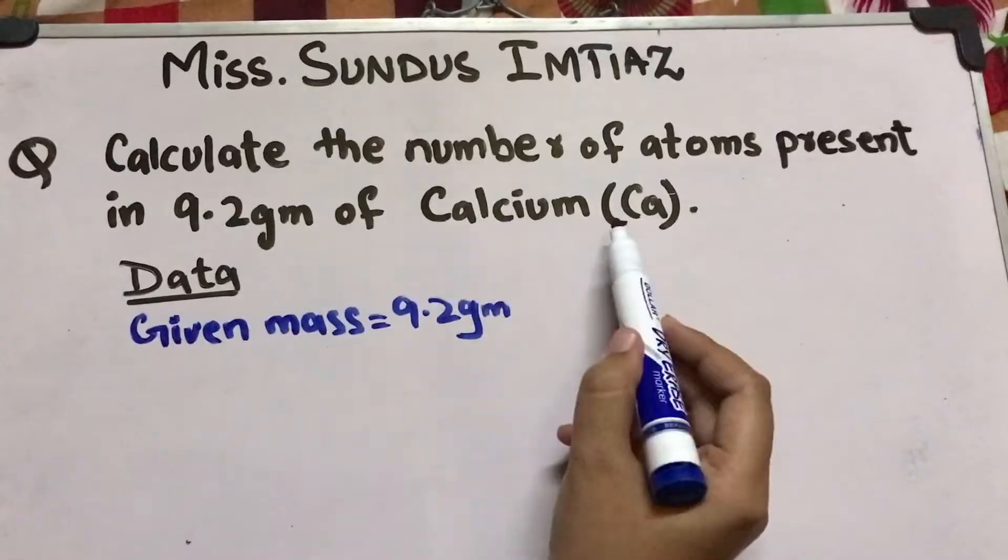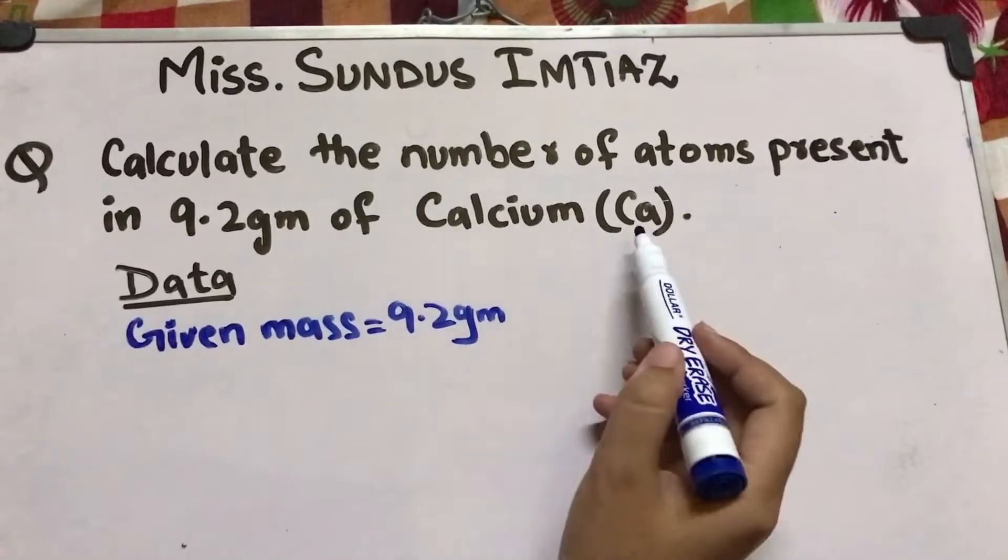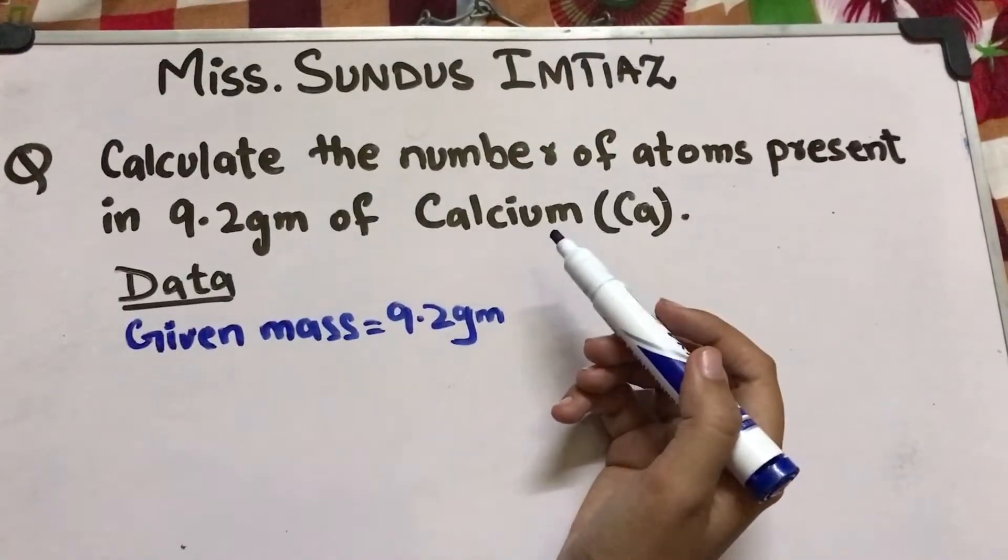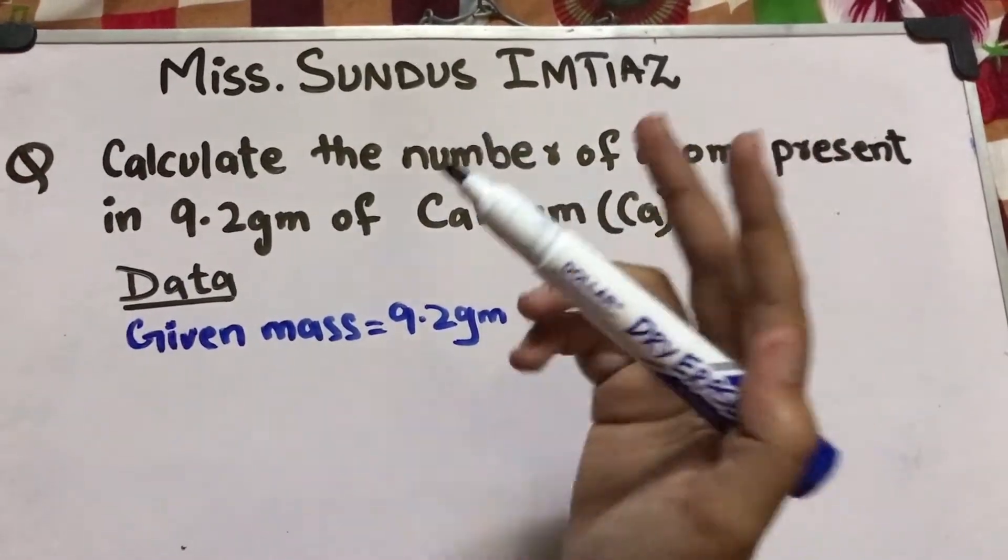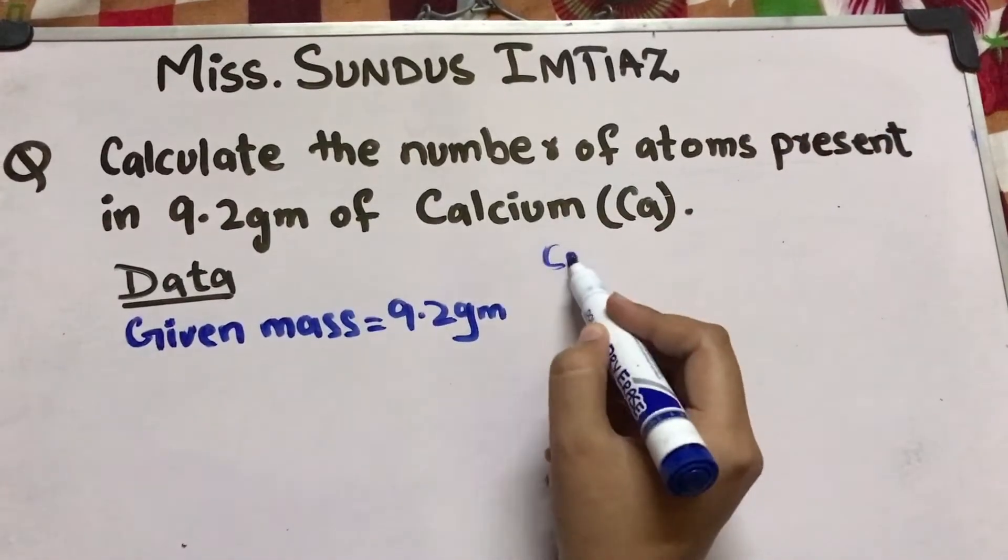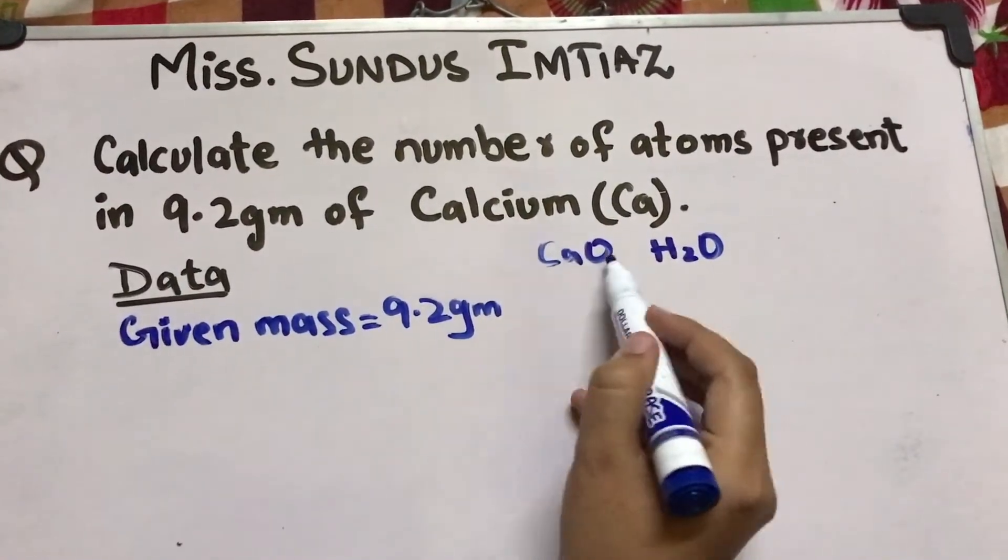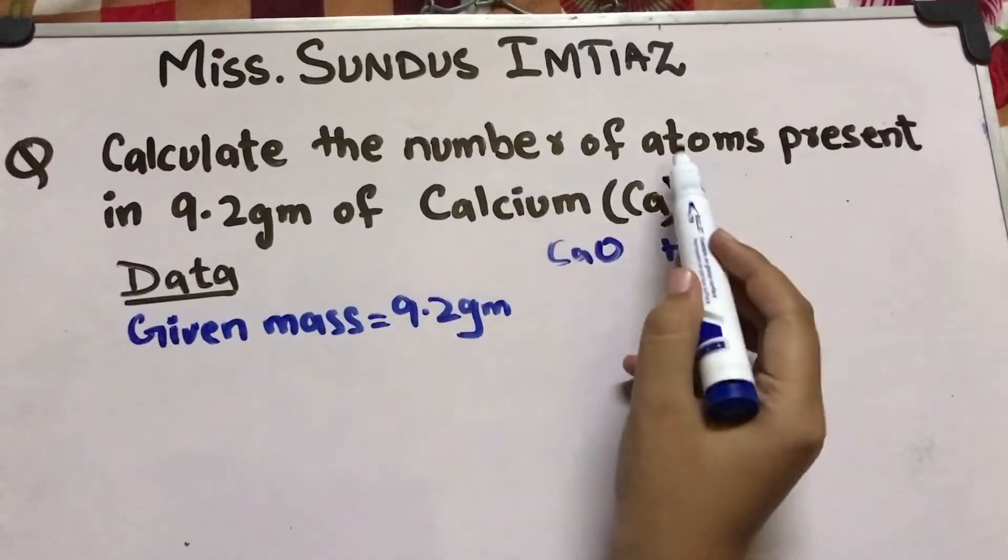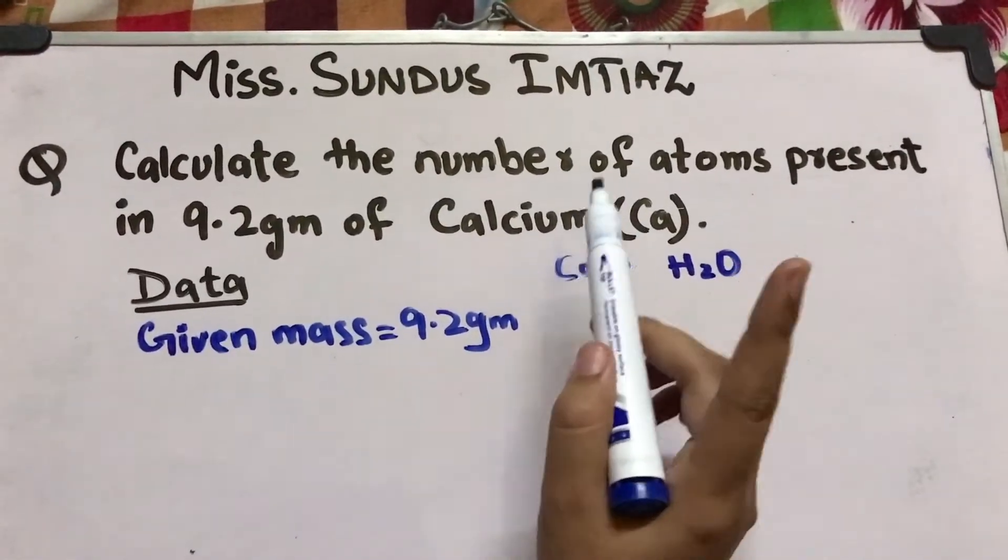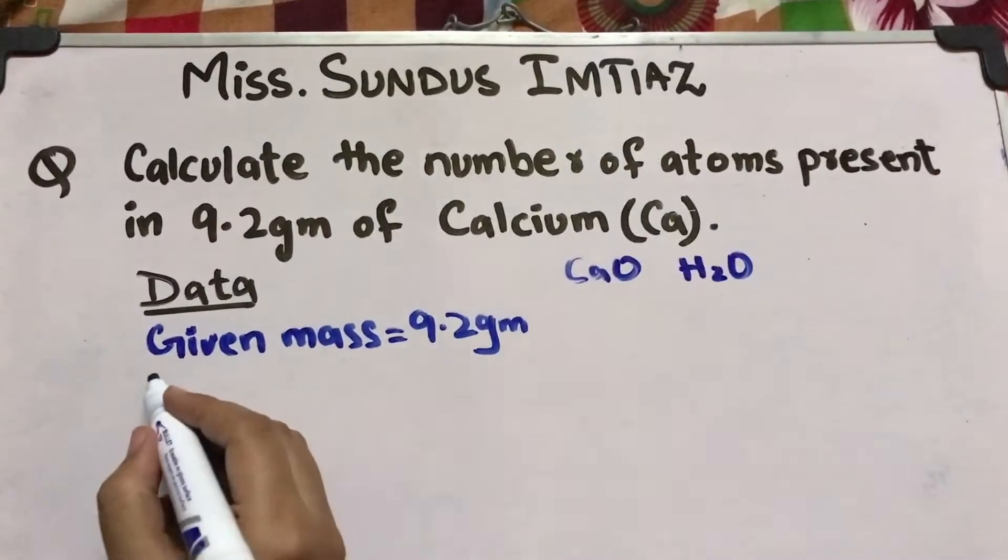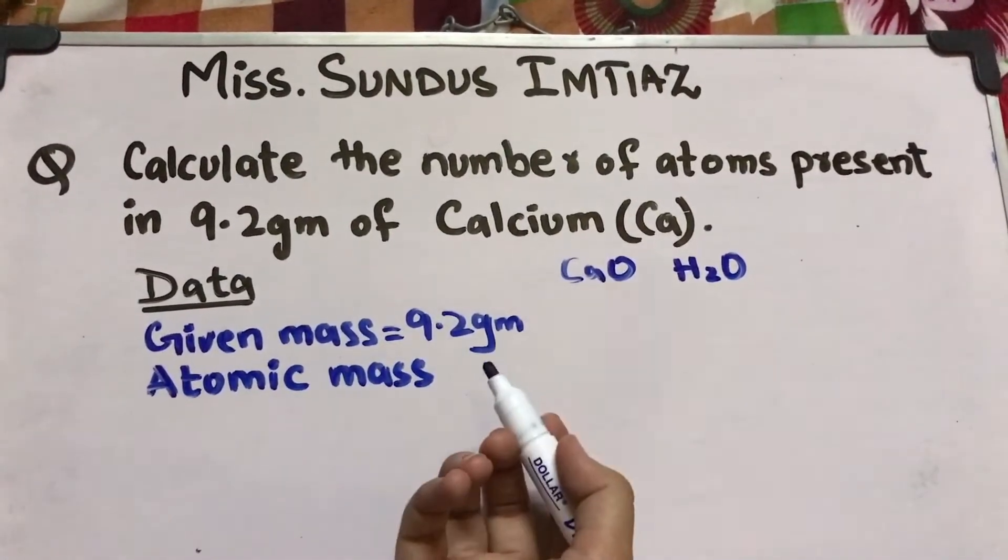The second thing we have to put in data is the atomic mass or molecular mass of atom or molecule. Now you have to see first if this is atom or molecule. Any element from the periodic table that is single, it means it is an atom. If there are more than one atoms attached like H2O, carbon dioxide, these are molecules. Here it is calcium atom, that's why you have to calculate the number of atoms and put atomic mass here. The atomic mass of calcium is 40.